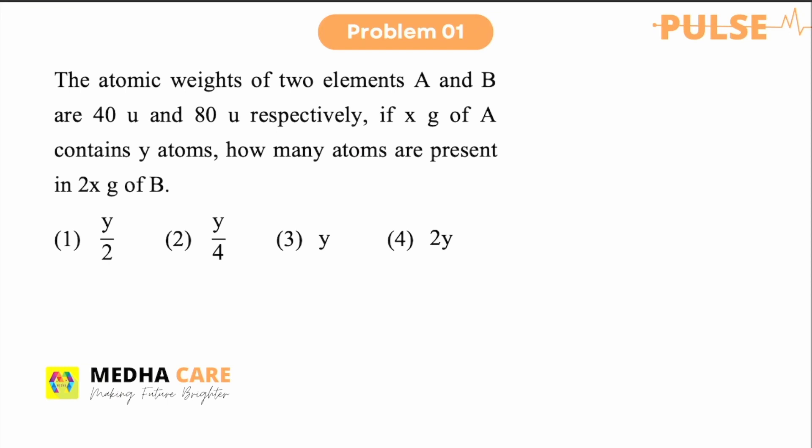The atomic weight of two elements A and B are 40u and 80u respectively. If x gram of A contains y atoms, how many atoms are present in 2x gram of B? So if you see in this case we have x gram of A. So first we will calculate moles of A.